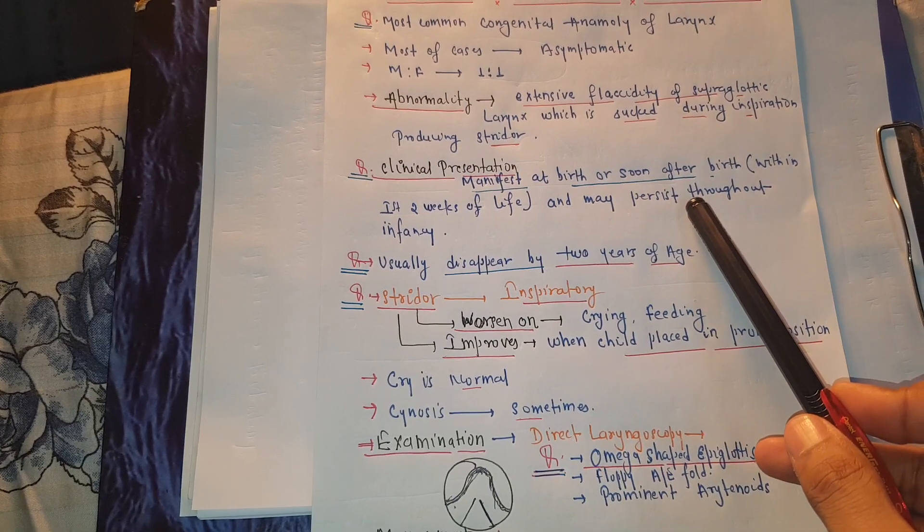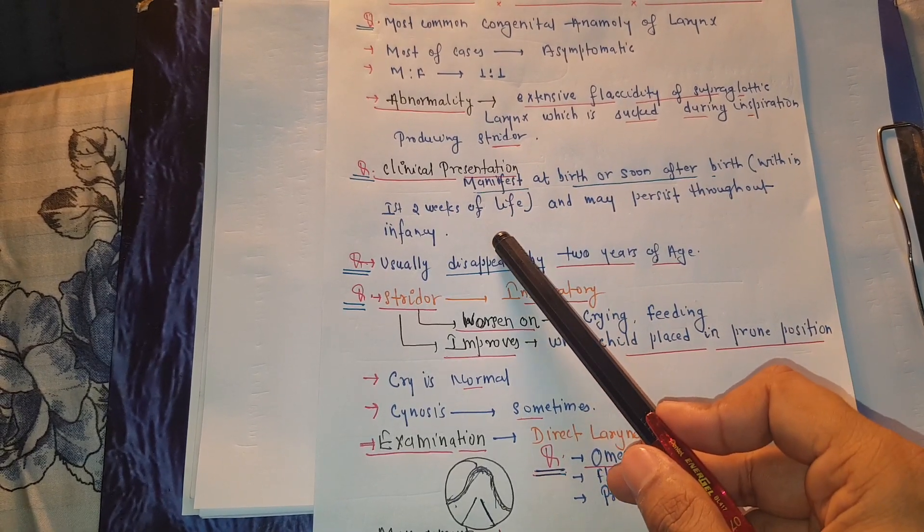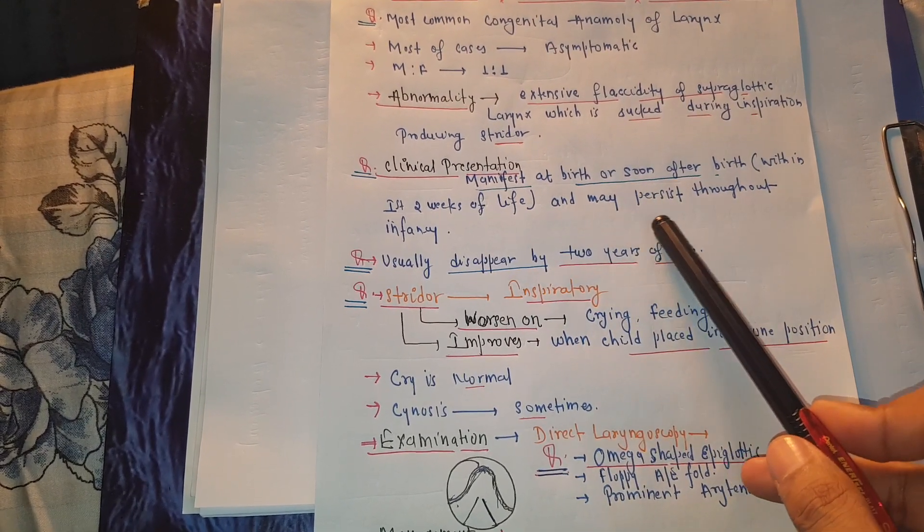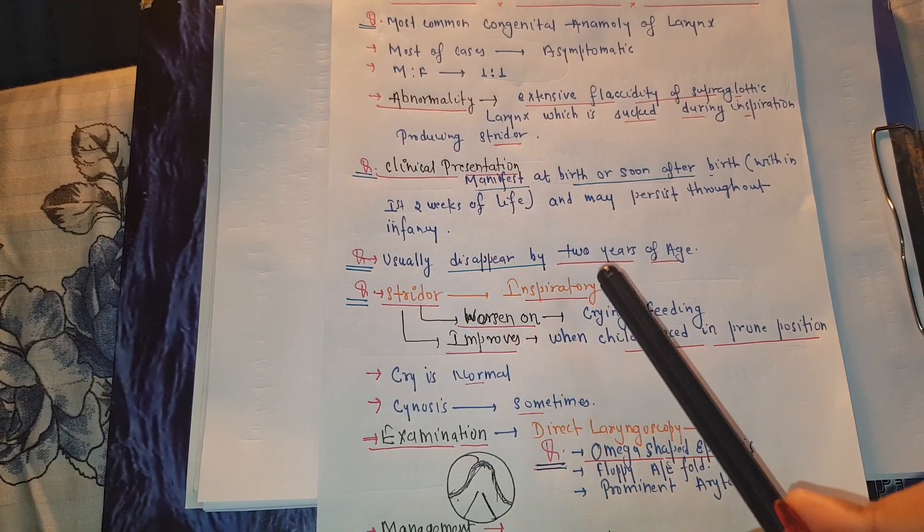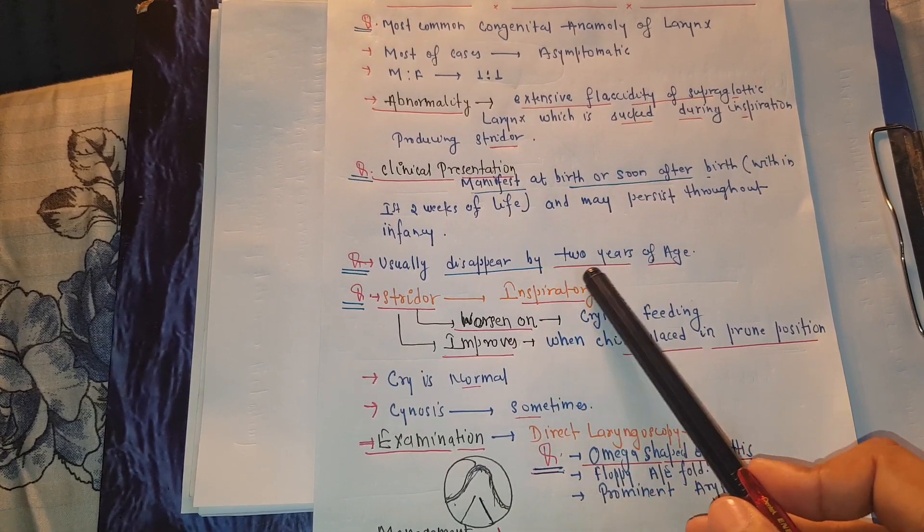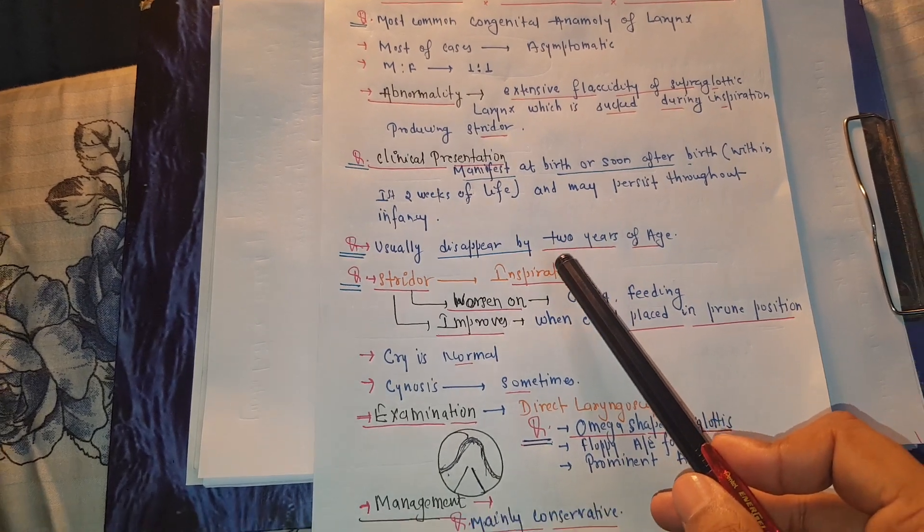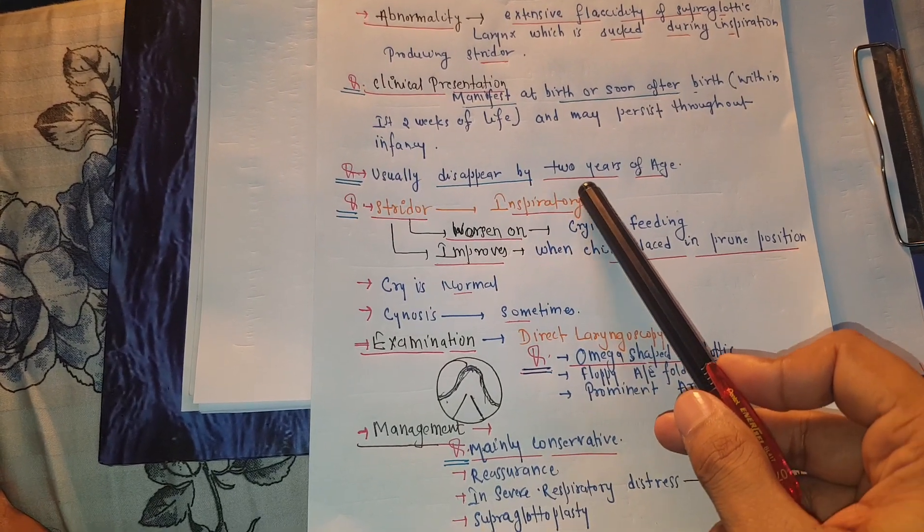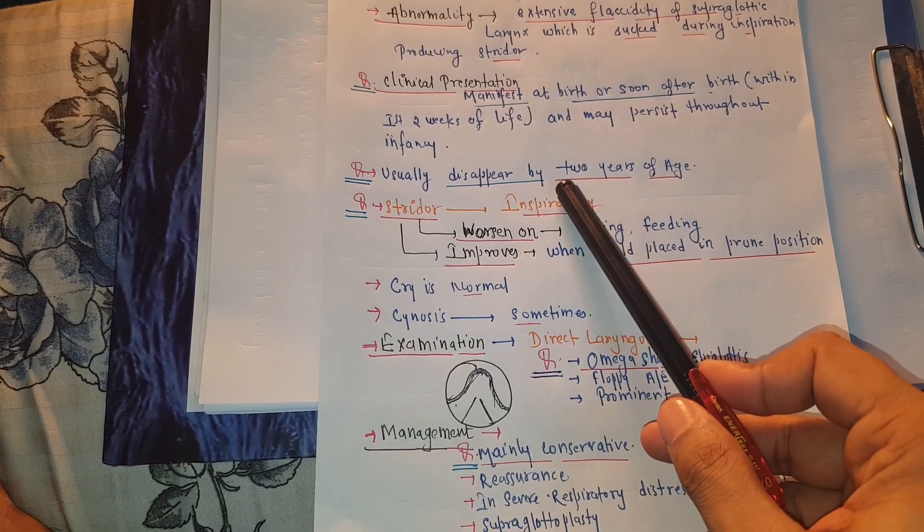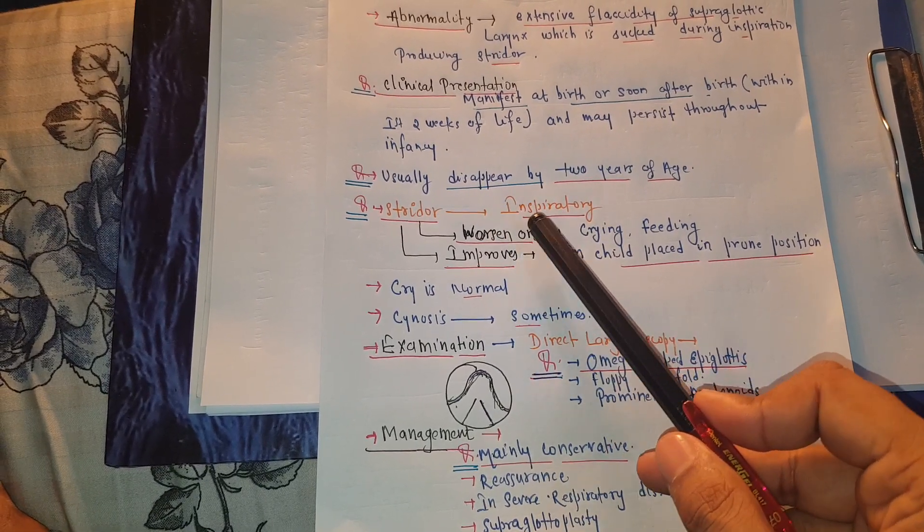It appears within the first two weeks of life and may persist throughout infancy. The disease usually disappears by the age of two years. The stridor present in laryngomalacia is inspiratory stridor.